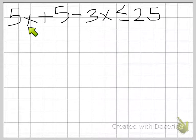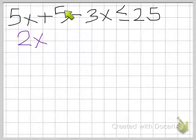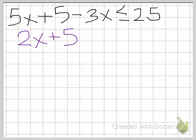And it's our 5x and our minus 3x. So looking at this, we have 5x minus 3x. 5x minus 3x will give us 2x. And then we need to just bring down our 5, so plus 5, and bring down the rest, less than or equal to 25.